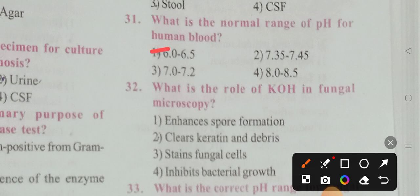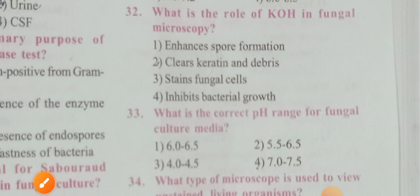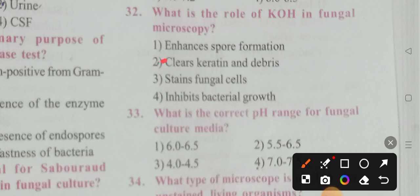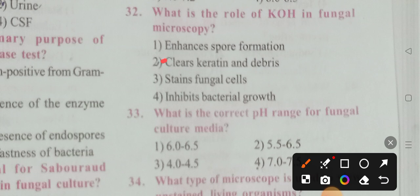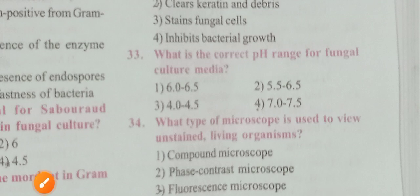What is the role of KOH in fungal microscopy? Options: enhances sporulation, clears keratin and debris, stains fungal infections, inhibits bacterial growth. Option 2 is the correct answer — KOH clears keratin and debris. What is the correct pH range for fungal culture media? Option 4 is the correct answer — 7.0 to 7.5.